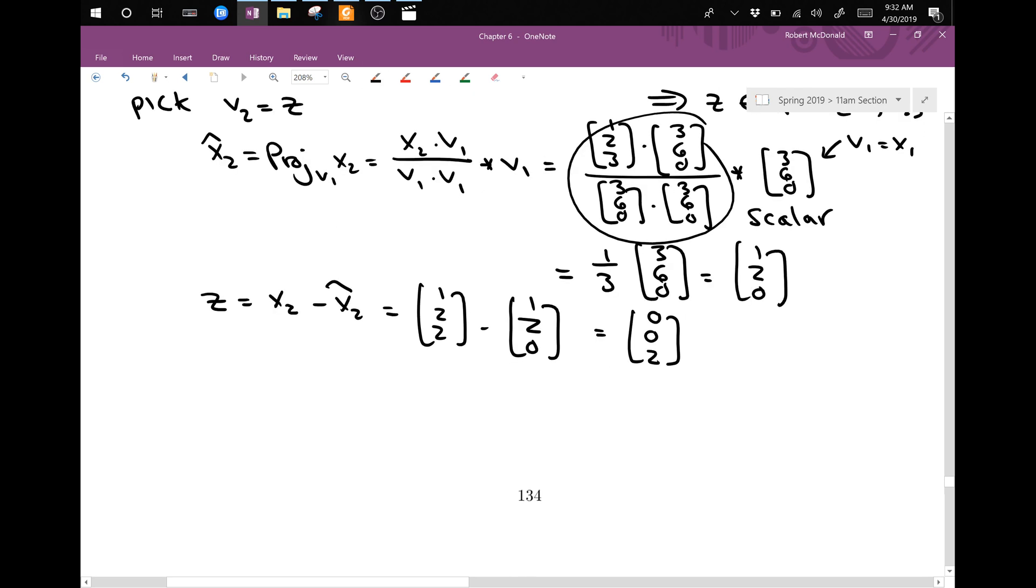And so again, remember this is by definition in the span of x1, x2 because this is just alpha times x1 for some alpha. And so this is something that lives in the span and has the added benefit that [0, 0, 2] dotted with [3, 6, 0] is definitely equal to zero. And so this implies that it's perpendicular.